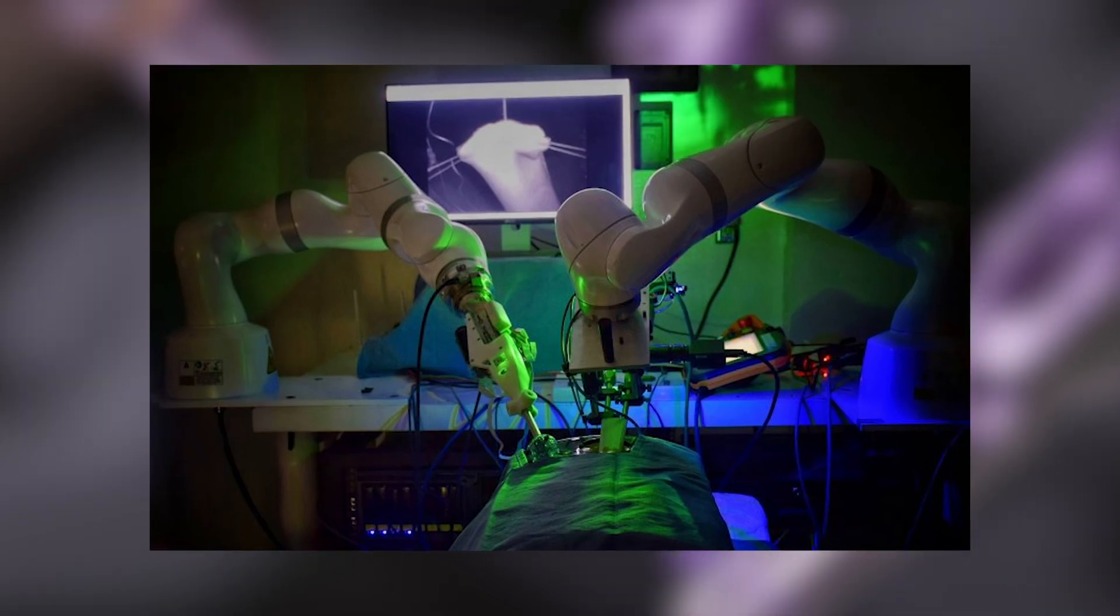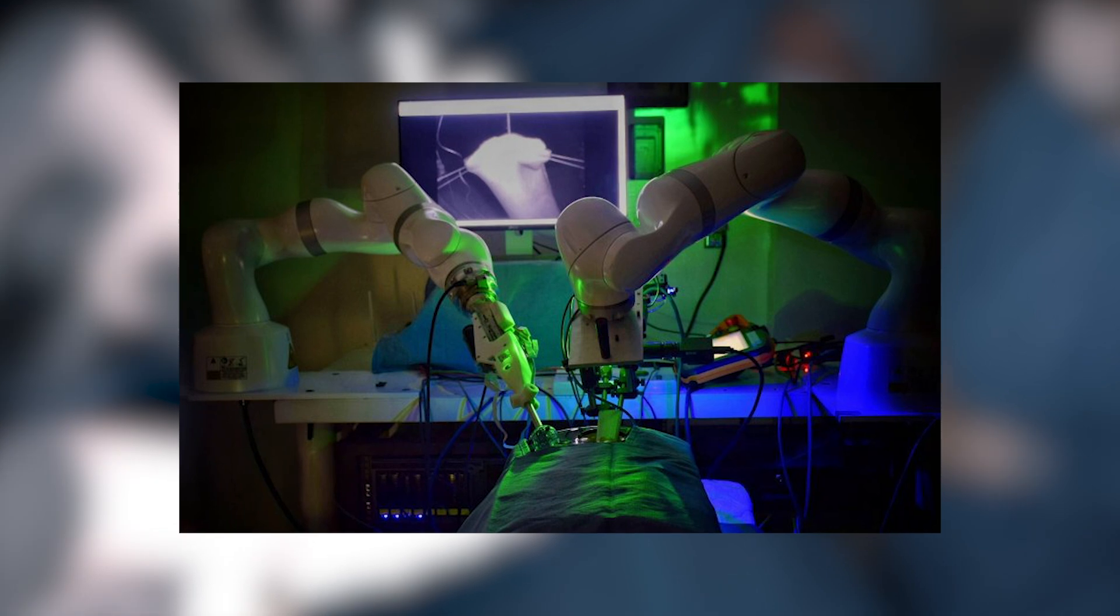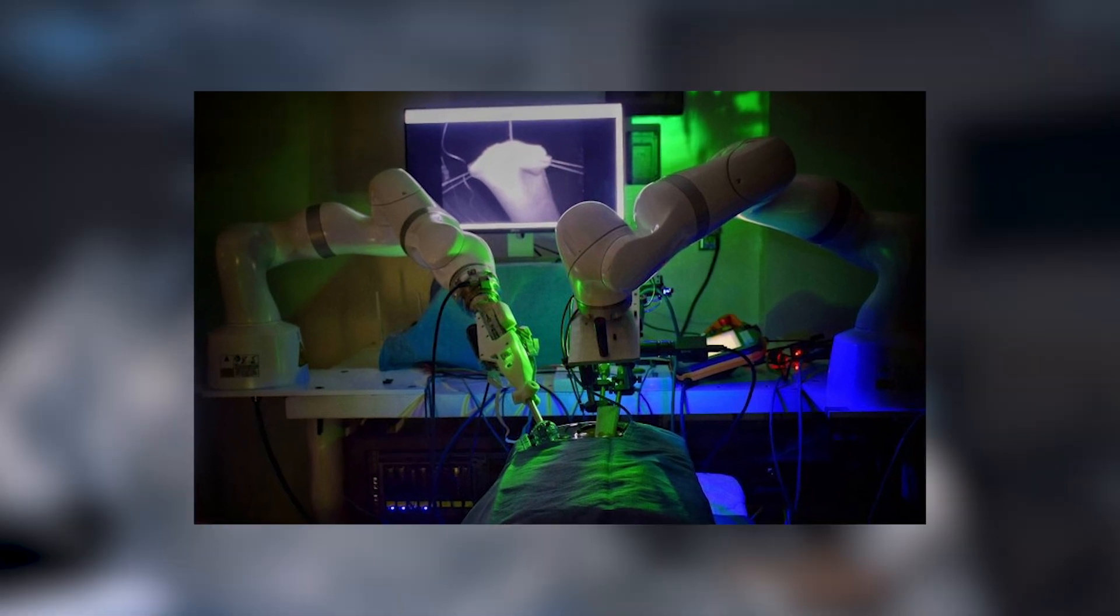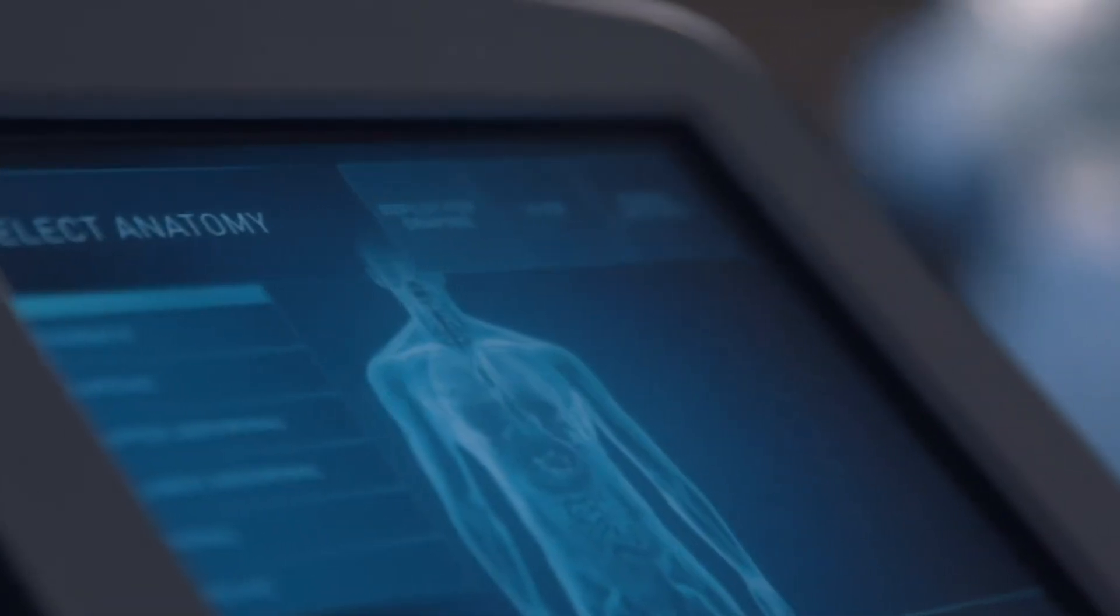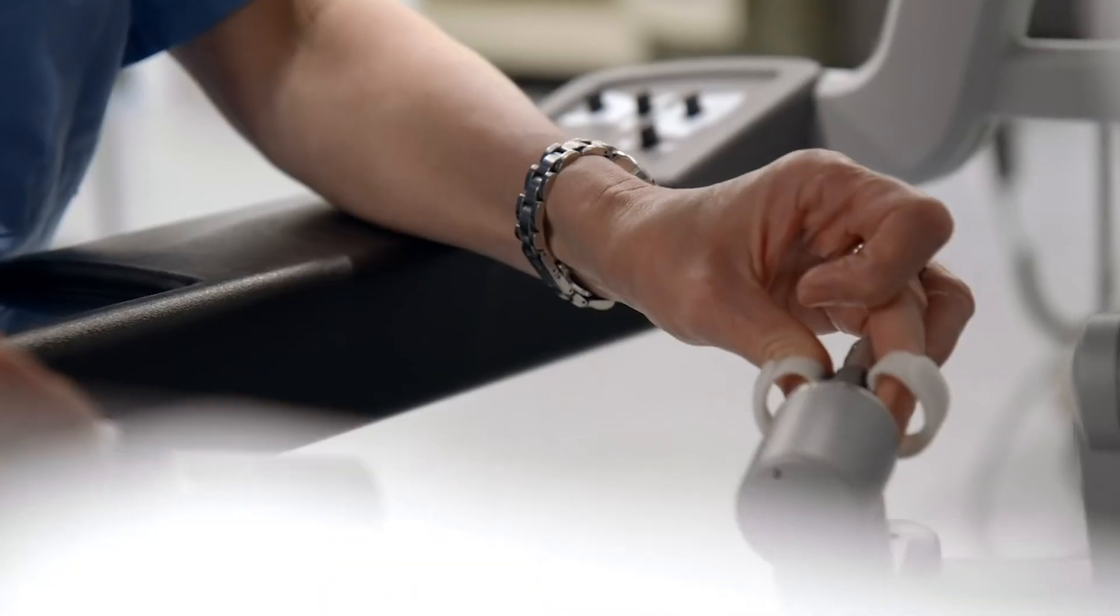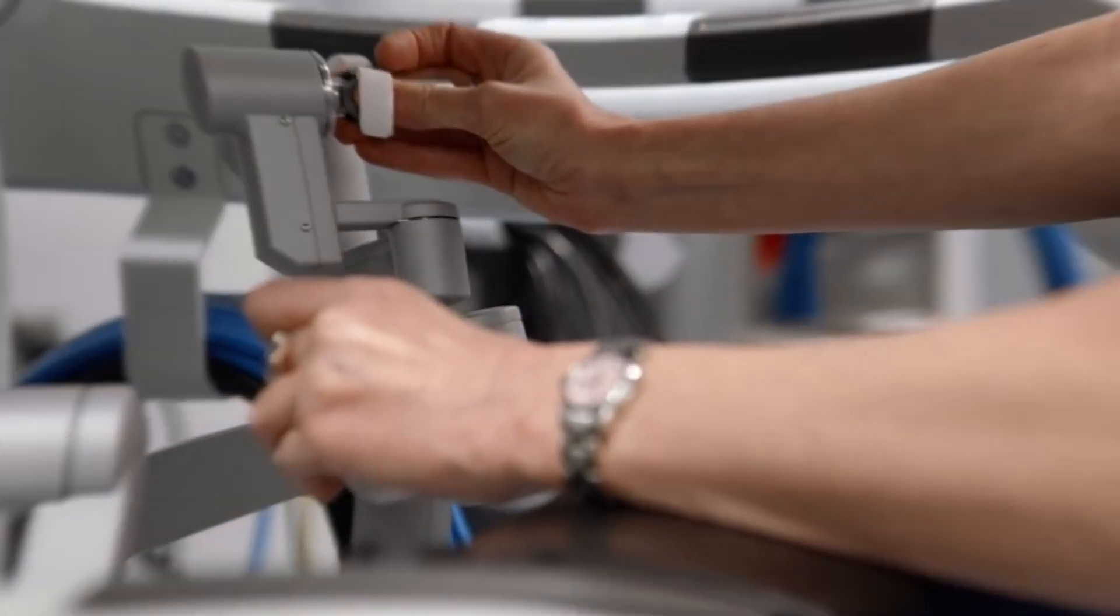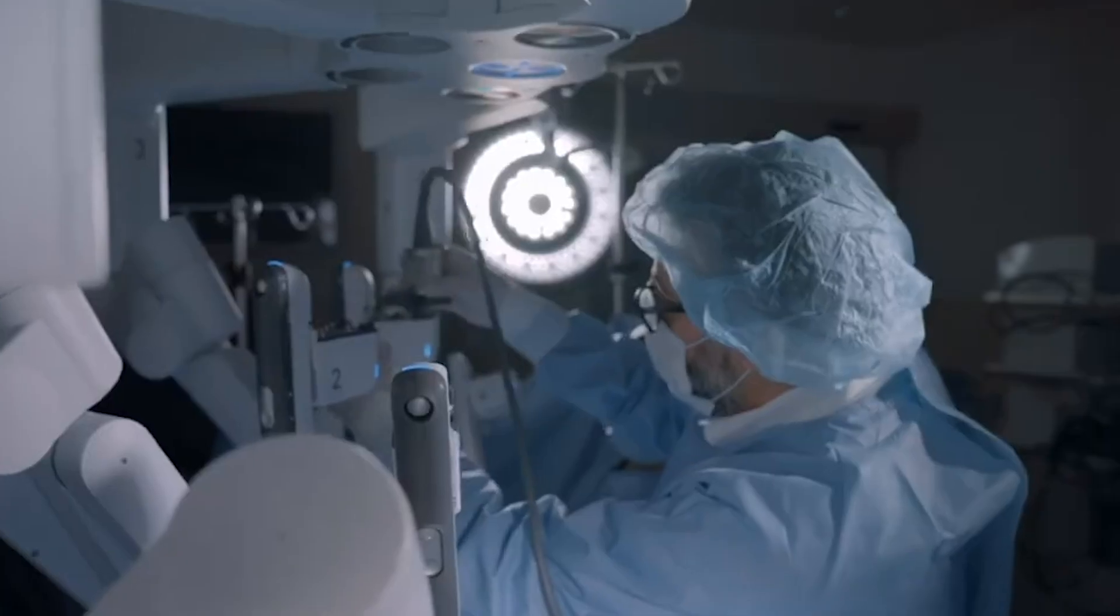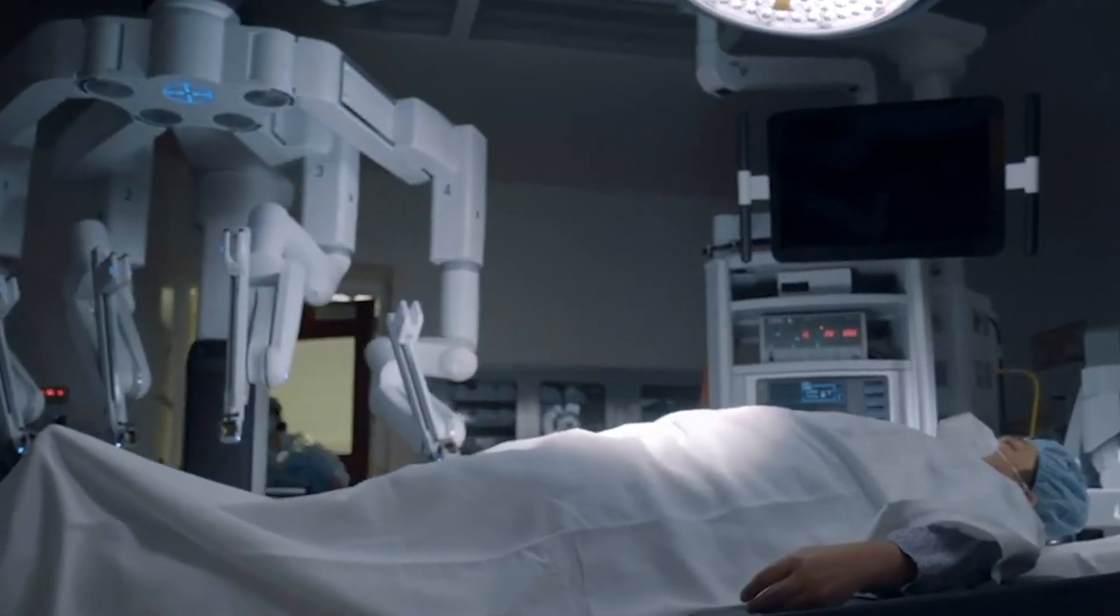The robot excelled at intestinal anastomosis, a procedure that requires a high level of repetitive motion and precision. Connecting two ends of an intestine is arguably the most challenging step in gastrointestinal surgery, requiring a surgeon to suture with high accuracy and consistency. Even the slightest hand tremor or misplaced stitch can result in a leak that could have catastrophic complications for the patient.